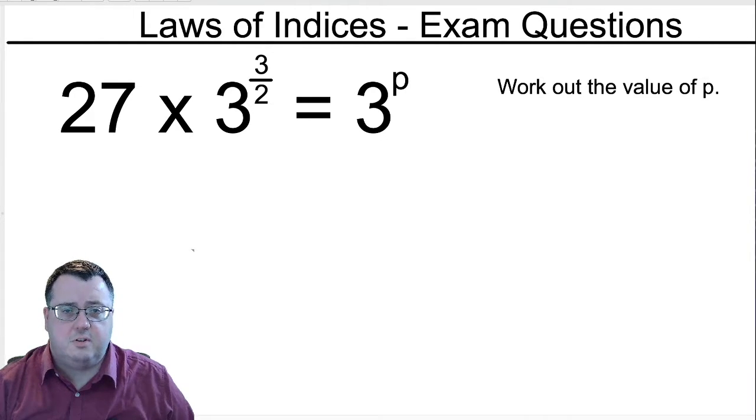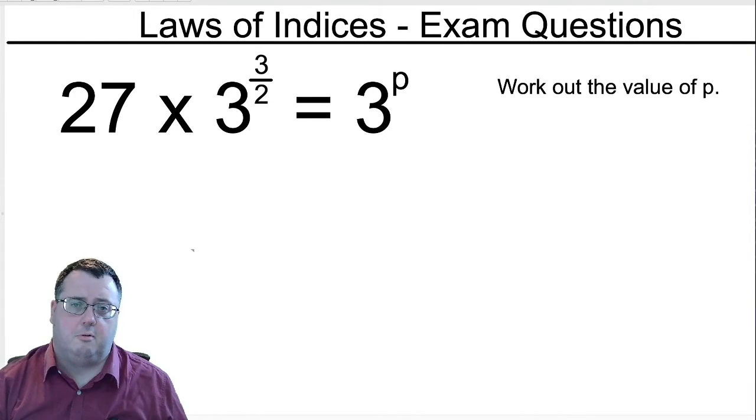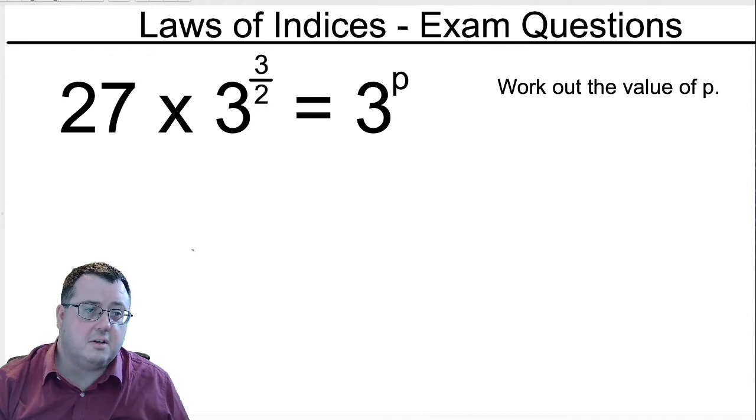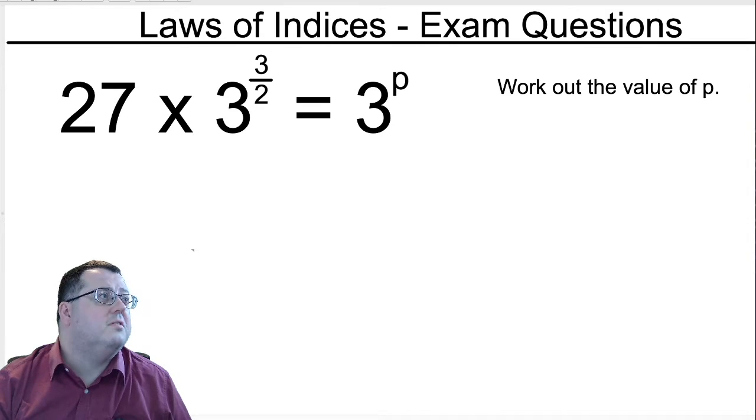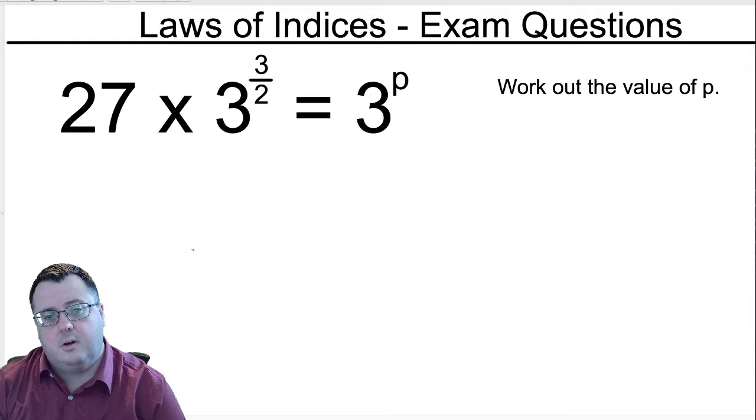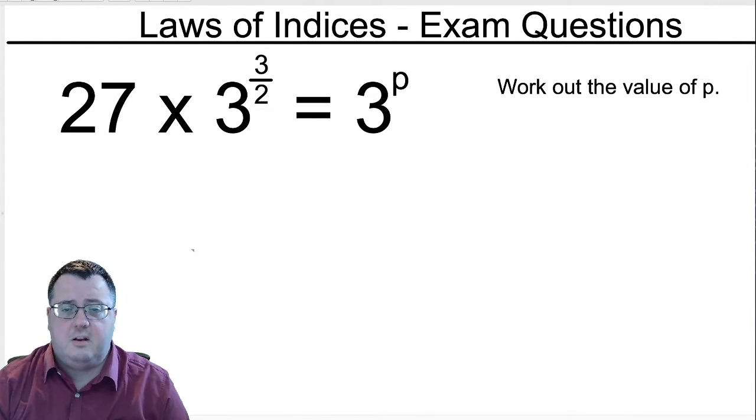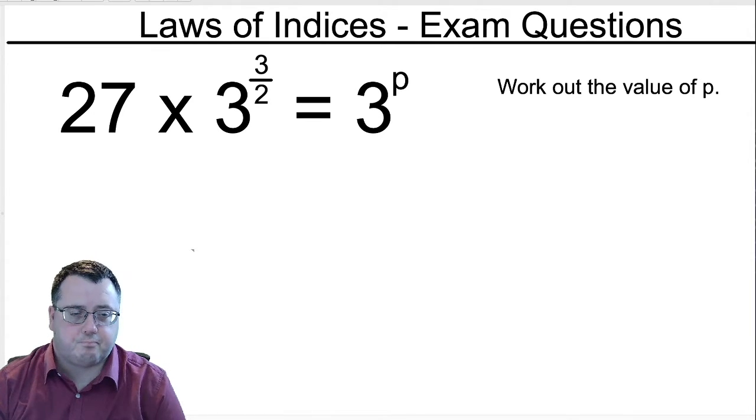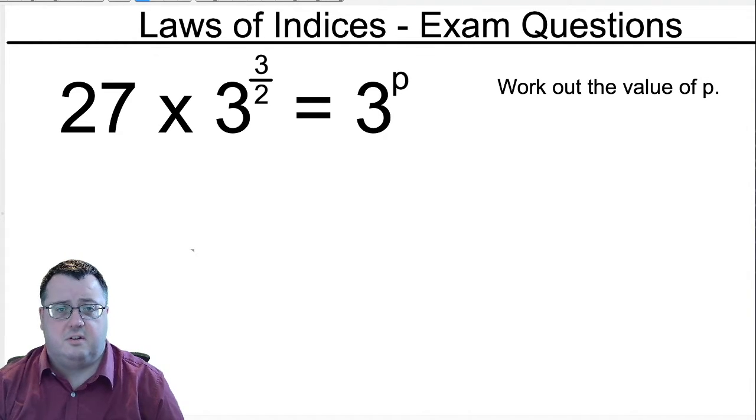Hello everyone and welcome to my final video on the laws of indices, where I'm going to have a look at old exam questions. So at this point, you can see a question up on the screen: 27 times 3 to the power 3 over 2 equals 3 to the power of p, work out the value of p. I'm going to give you a moment to have a look at that and I will then start going through the answers on the next slide.